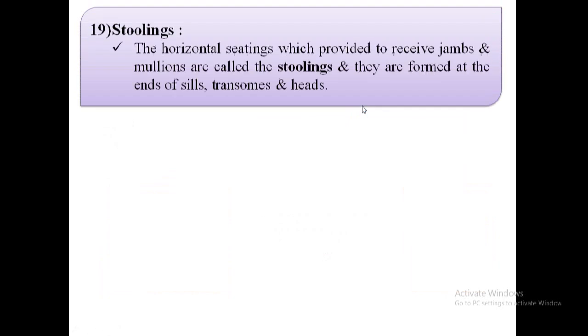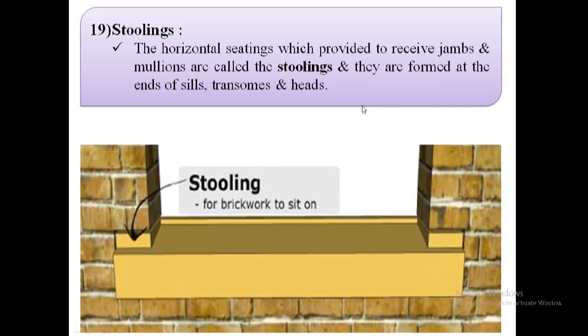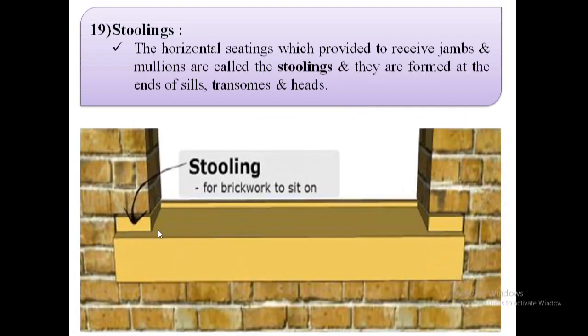The next term is stoolings. The horizontal seatings provided to receive jambs and mullions are called stoolings. As shown in the image, these are the stoolings, and they are formed at the ends of sills, transomes, and heads.